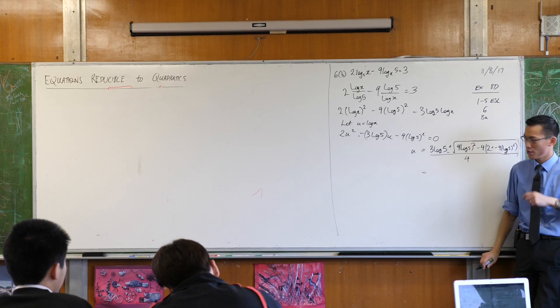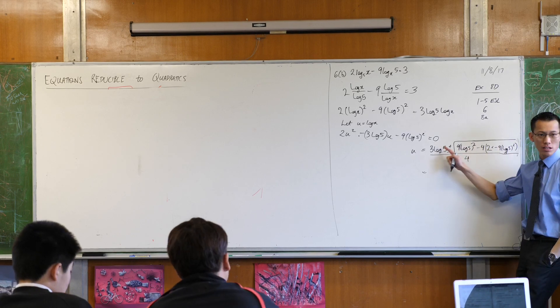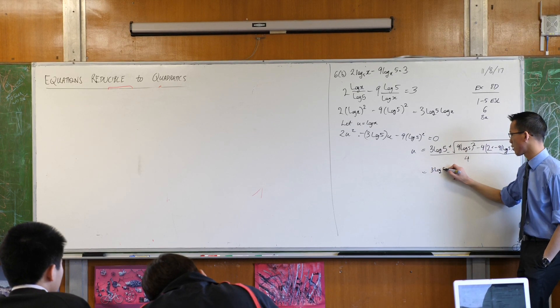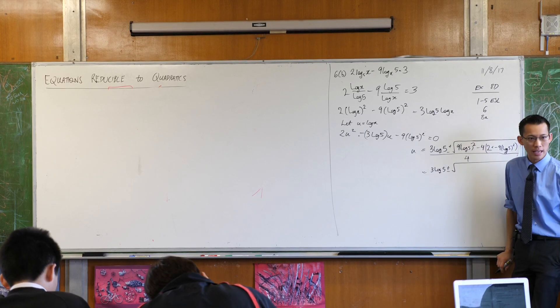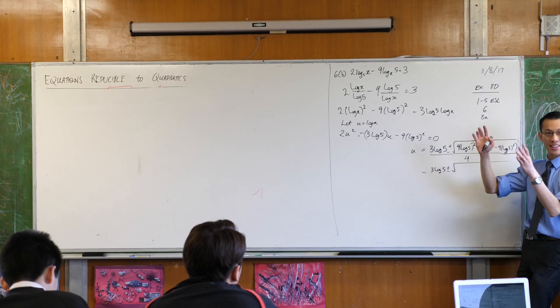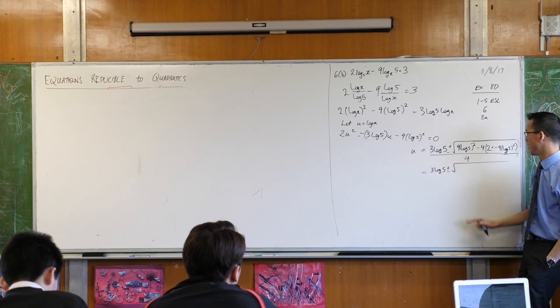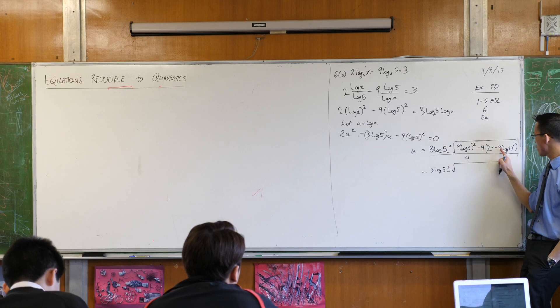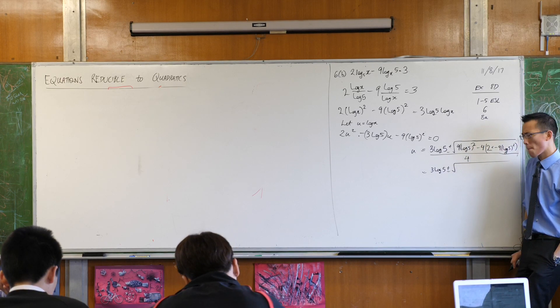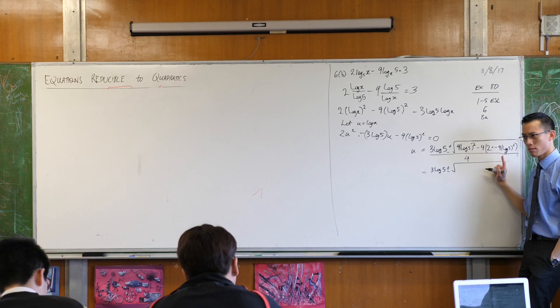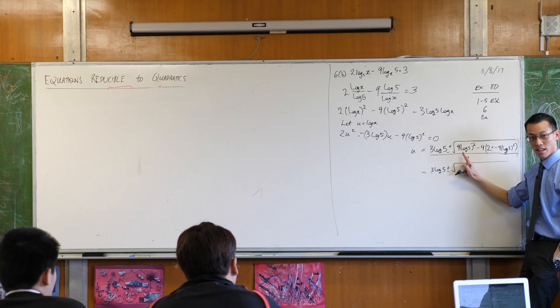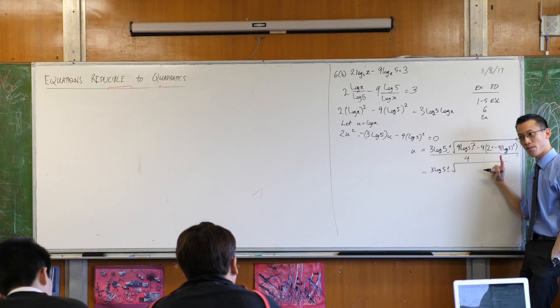Now, this looks disastrous, but I'm expecting a lot of stuff will cancel out here, right? So I've got my 3 log 5 hanging out the front. Plus or minus, okay, look carefully. How many log 5 squares do I have? I've got 9 of them here and then how many do I have here? 8 times 9, 8 times 9 is 72, right?